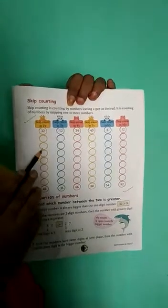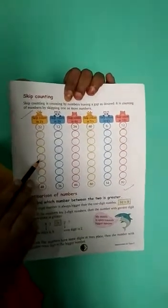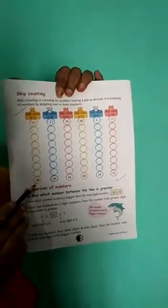Here you see 32 is written. After that here you will write 34, 36, 38, 40, 42, 44, 46, 48. Okay?